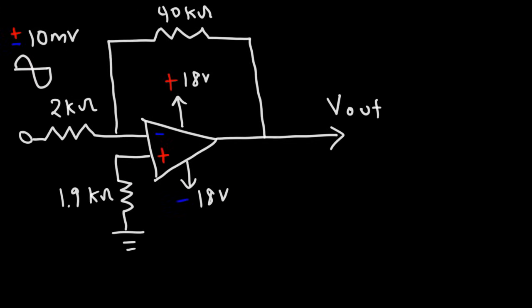Let's work on an example problem. So here we have an operational amplifier circuit. And we're given the voltage of the input signal. And we want to calculate two things. What is the closed loop voltage gain of this particular circuit? And also, what is the output voltage?